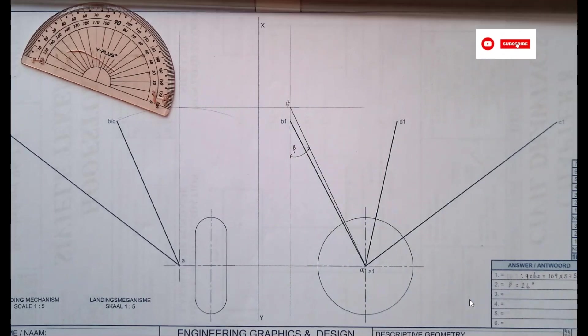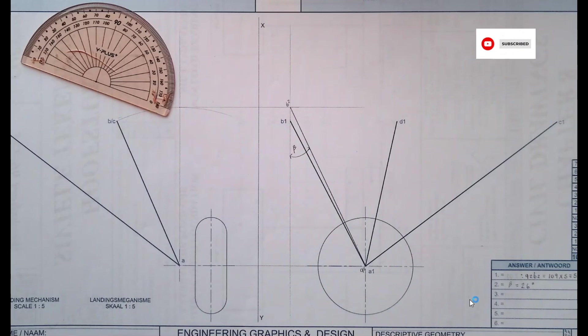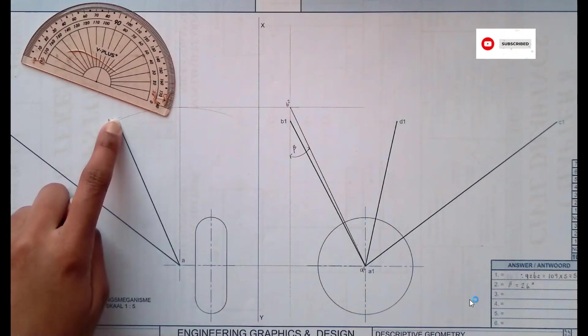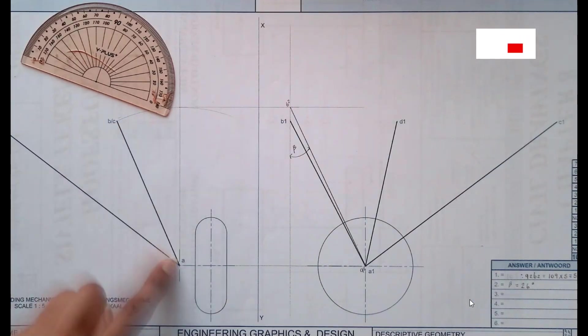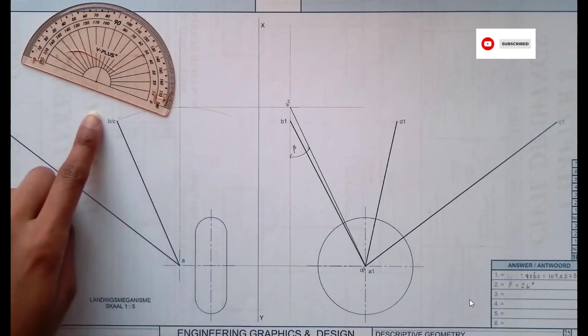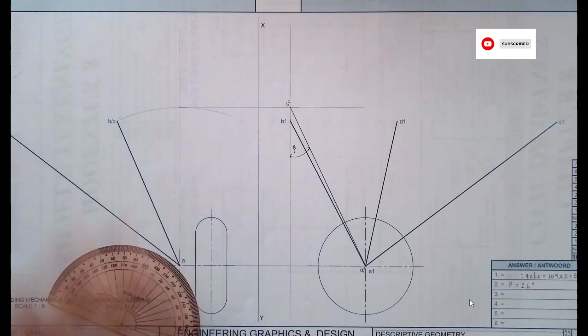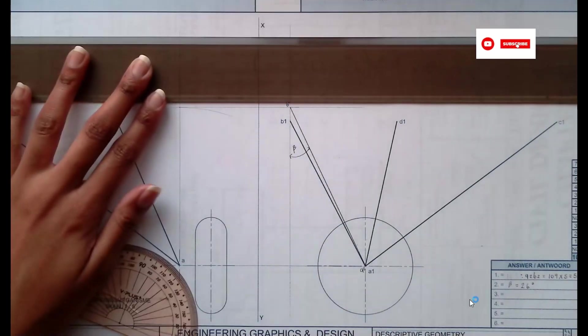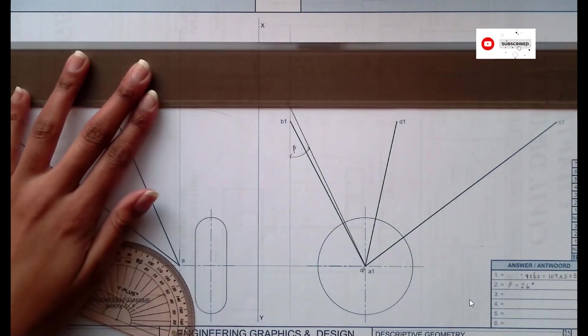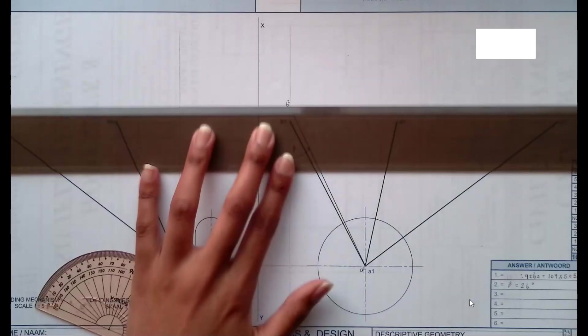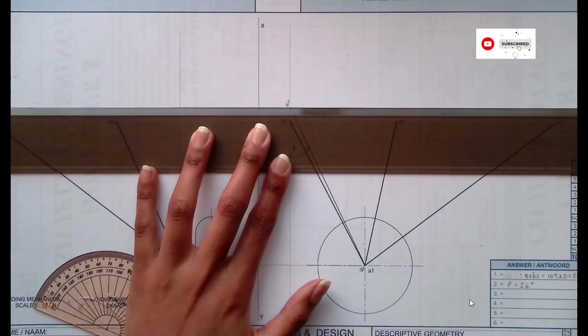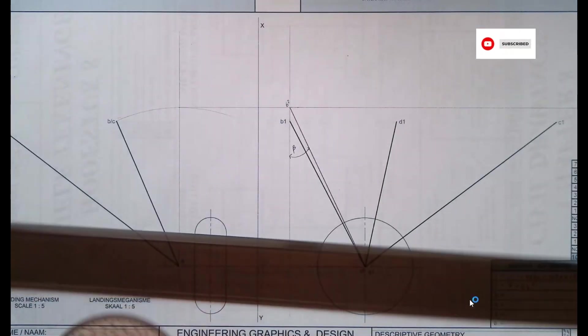Then for three, the instructions are saying the true length of strut AC. So now AC, we have AB and we have AC here. That means my line, I still need to extend it. Where C is, because in the left view, my C is here, I'm just going to take it across. And then vertically again, I'm going to extend C1 up.